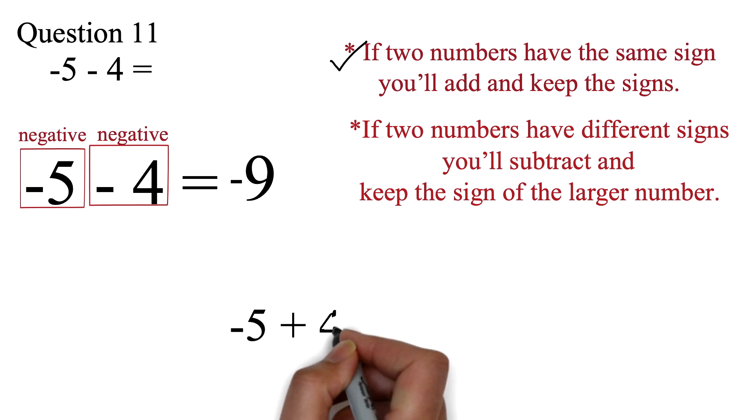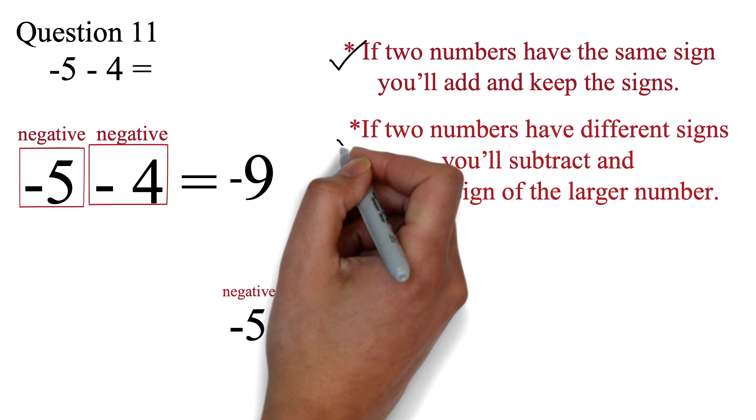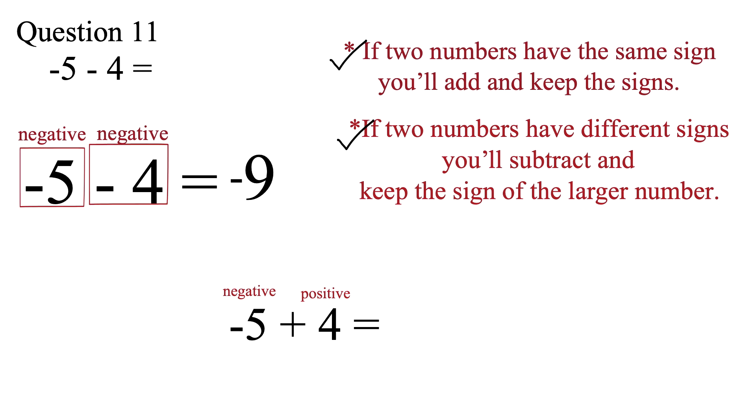So if we have negative 5 plus 4, we will have one of the numbers to be negative and the other to be positive. If the signs are different, we will subtract and keep the sign of the bigger number. So we have 5 minus 4 to get 1. Since the 5 is the bigger number with a negative, we will keep the negative. So we have negative 1 as the answer.